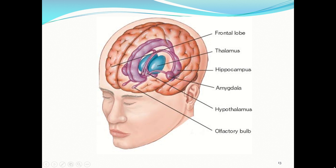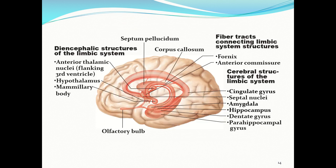The amygdala helps you recognize fearful situations — like a cat spreading its tail in fear — which is a protective mechanism. Another illustration shows the amygdala, hippocampus, and cingulate gyrus, which joins with the fornix. There are many other structures in this region, but we are focusing on those three.